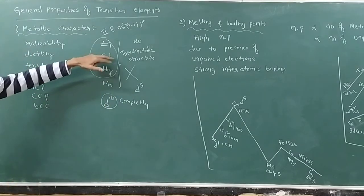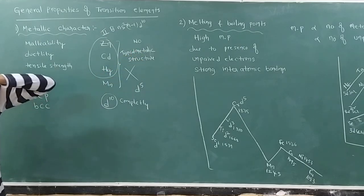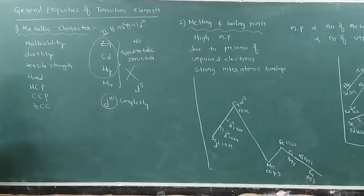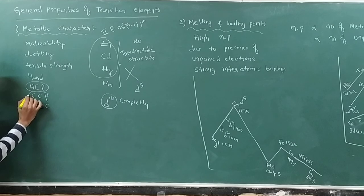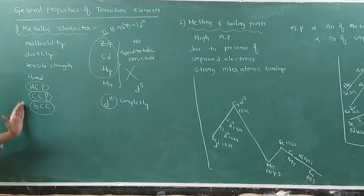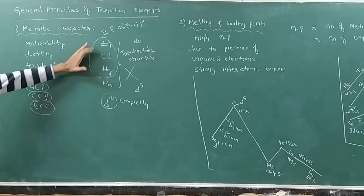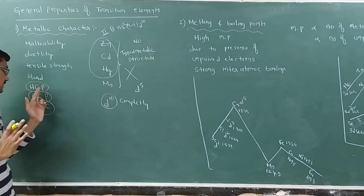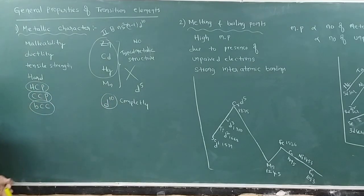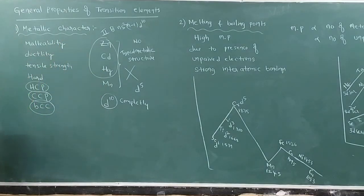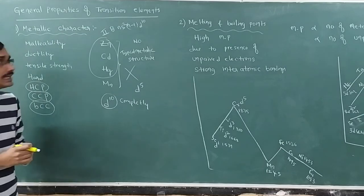These transition elements are having typical metallic structures: HCP (hexagonal close packing), cubic close packing, and body-centered close packing. But manganese does not have such a typical structure, so its properties are completely different. We will discuss that later.